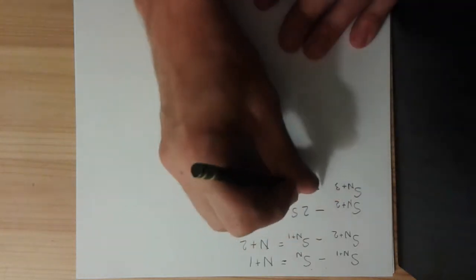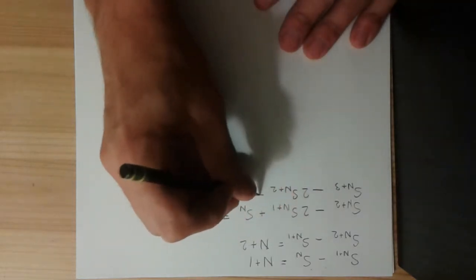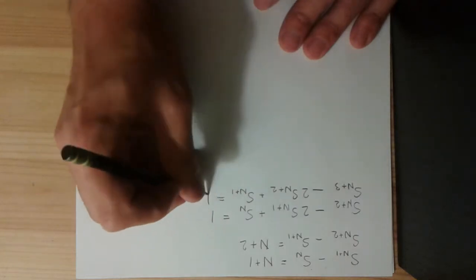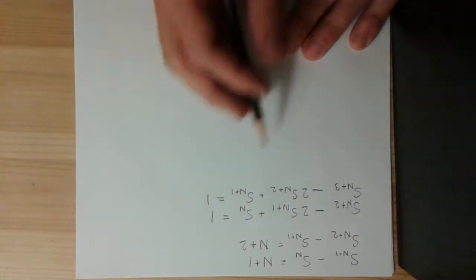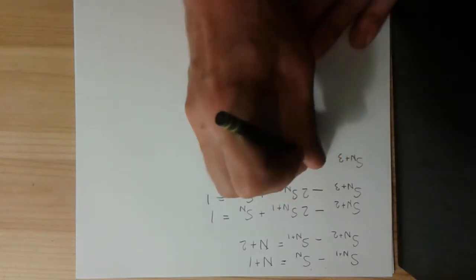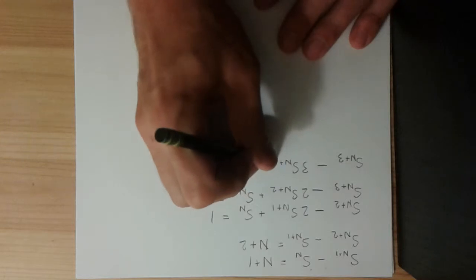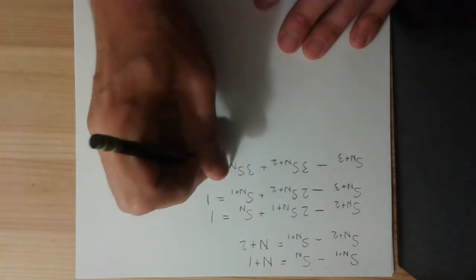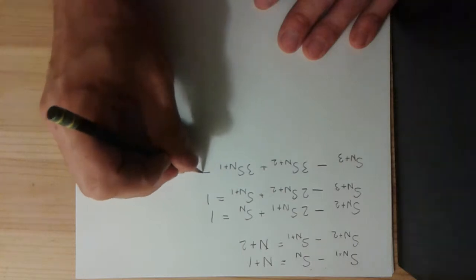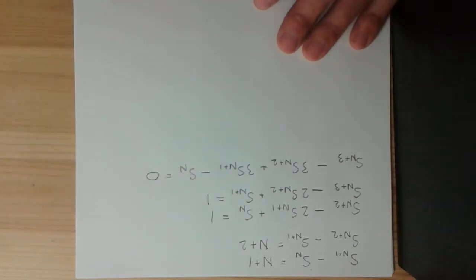Iterate one more time. And subtract. Take the bottom one and subtract the top one. And now I have a homogeneous.